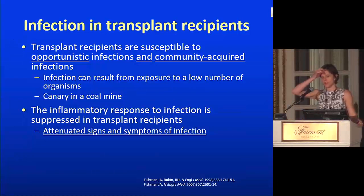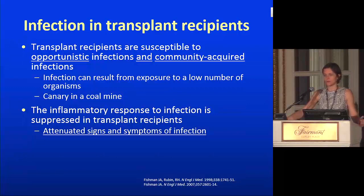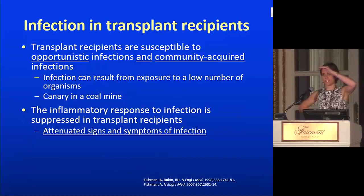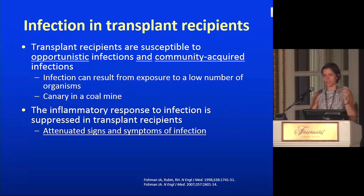Sometimes those patients are the first ones to show up with symptoms of something breaking out in the community — they can be the canary in a coal mine, the first person to show up with influenza when it's influenza season. The inflammatory response to infection is suppressed in transplant patients — this is really important. They have very attenuated signs and symptoms. A renal transplant patient with pneumonia might show up with a bit of a cough and a temperature of 100.2, but have a really socked-in pneumonia on chest x-ray.